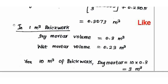In this point, we will learn how to do this. If we are asked for dry mortar volume or wet mortar volume for 1 m³ or 10 m³, we can use these values. Dry mortar volume is 0.3 m³ per 1 m³ brickwork. Wet mortar volume is 0.23 m³ per 1 m³ brickwork. So if we are asked for dry mortar volume for 10 m³ brickwork, we use these values.